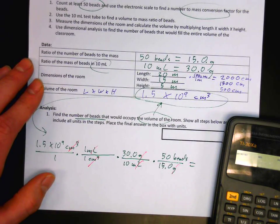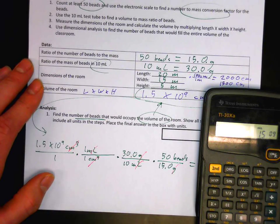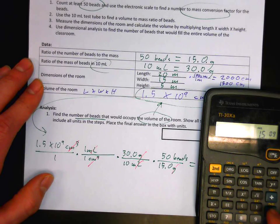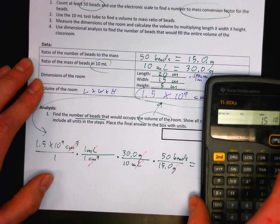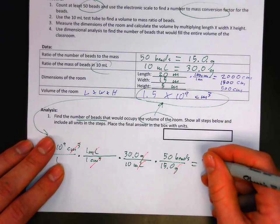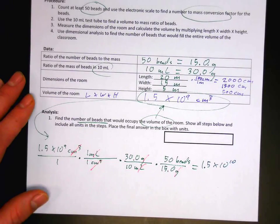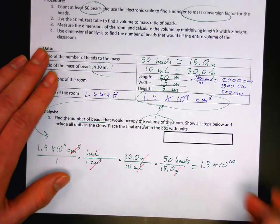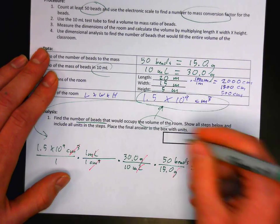So we have 1.5 times 10 to the 9th, and that's going to be multiplied by 30 times 50, divided by 10 times 15. That comes out to 1.5 times 10 to the 10th. And so that's the number of beads — 1.5 times 10 to the 10th beads in this room.